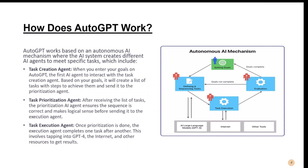Auto-GPT works based on an autonomous AI mechanism where the AI system creates different AI agents to meet specific tasks. This includes task creation: when you enter your goals, the first agent — the task creation agent — creates a list of tasks with steps to achieve them and sends it to the prioritization agent. The prioritization agent then ensures the sequence is correct and makes logical sense.